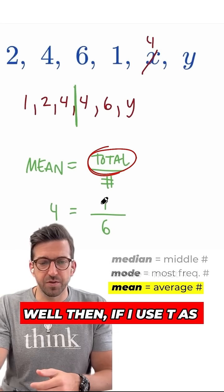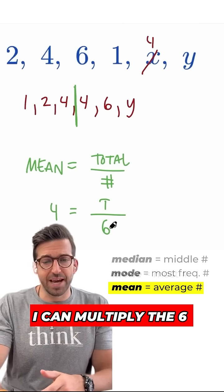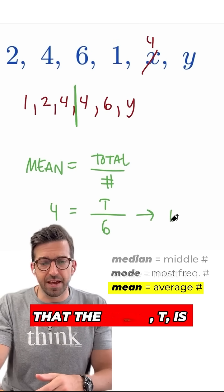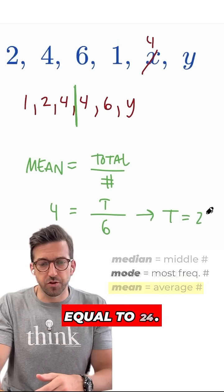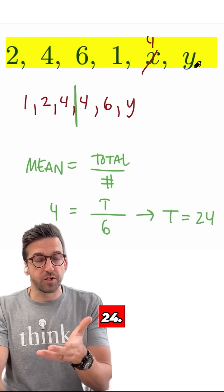Well, then, if I use T as a variable to represent the total of all my numbers, I've got a really simple equation that I can solve. I can multiply the six over, and then I get that the total, T, is equal to 24.